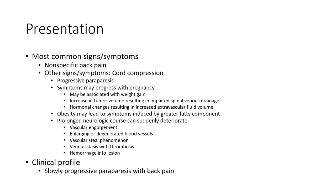Most common signs and symptoms include non-specific back pain. Other signs and symptoms related to compression can result in progressive cord paralysis. Symptoms may progress with pregnancy, associated with weight gain and increase in tumor volume, resulting in impaired spinal venous drainage and hormonal changes resulting in increased extravascular fluid.